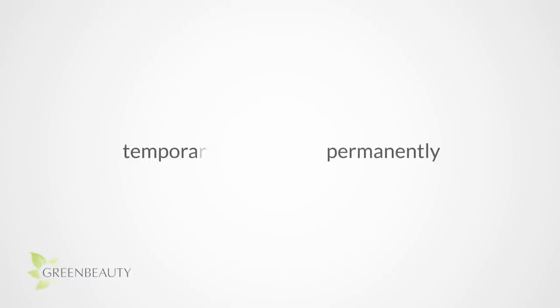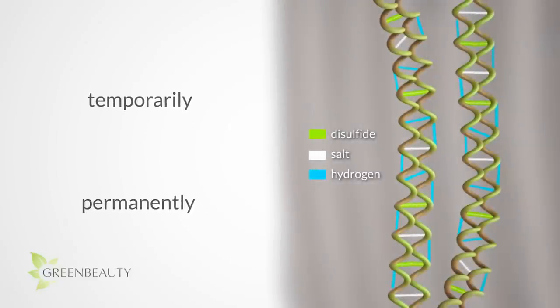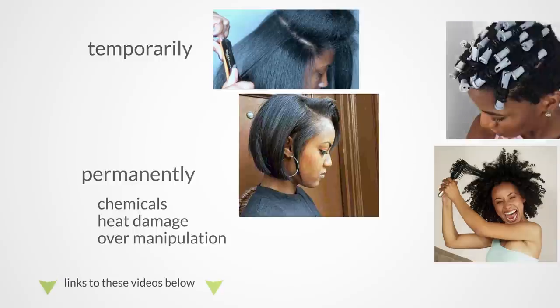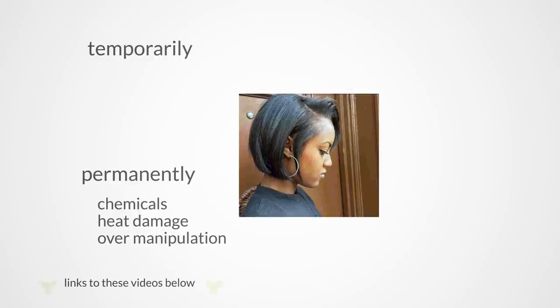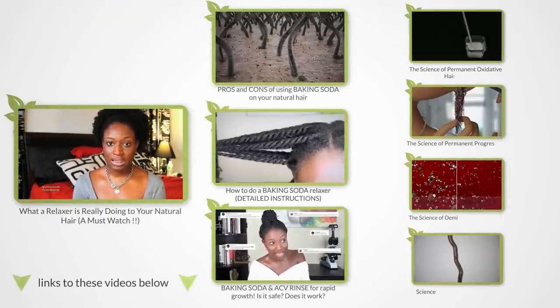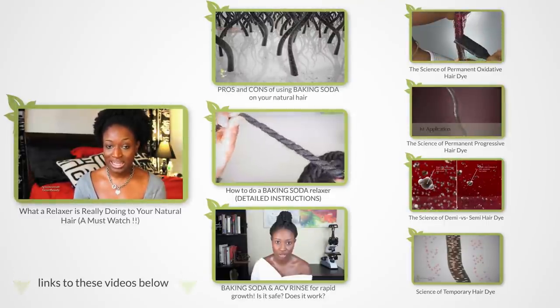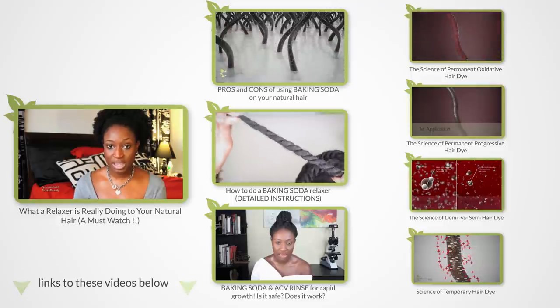As mentioned earlier, your curl pattern can be changed. So let's go over the two only ways to change your curl pattern, either permanently or temporarily. Changing your curl pattern requires you to permanently break the stronger disulfide bonds in your hair, with chemicals, heat damage, or over manipulation. It's a risk because with the structure of your hair compromised, it's in a weaker, more vulnerable state. Some examples of chemicals that can permanently change your curl pattern are relaxers, baking soda, and hair dyes. Below are videos on these three chemicals and details on how they work.